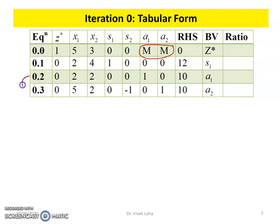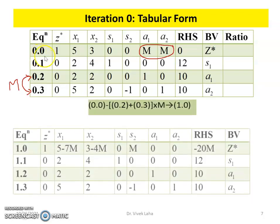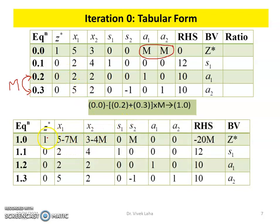We perform certain row operations: adding and subtracting appropriate rows to obtain the desired identity matrix. After these Gaussian eliminations, the identity matrix is formed with the column for Z* as [1,0,0,0], S₁ as [0,1,0,0], A₁ as [0,0,1,0], and A₂ as [0,0,0,1].